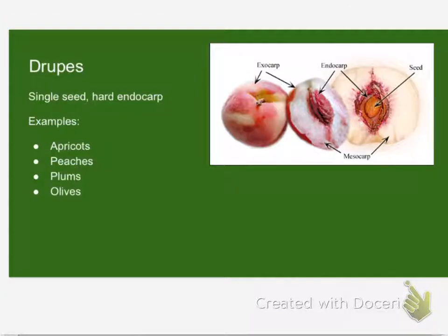It's a drupe. A cherry. Cherries, apricots — actually not avocados. It's got a single seed, but that's a fantastic mistake because I have made that myself. The key is this: the endocarp, the boundary between the seed and the fleshy part, is hard. Peaches, plums, cherries — it's got a pit. Sometimes these are called stone fruits. Olives have a pit in there. If it's got a pit, it's a drupe. Olives, cherries, apricots, plums — those are all drupes because they've got that hard pit in the middle.